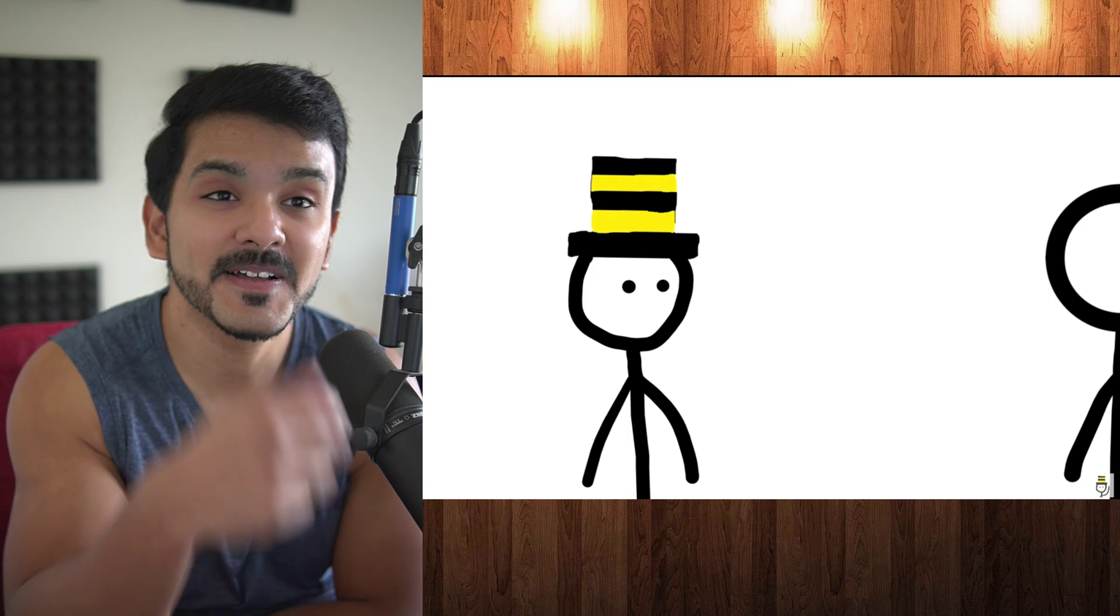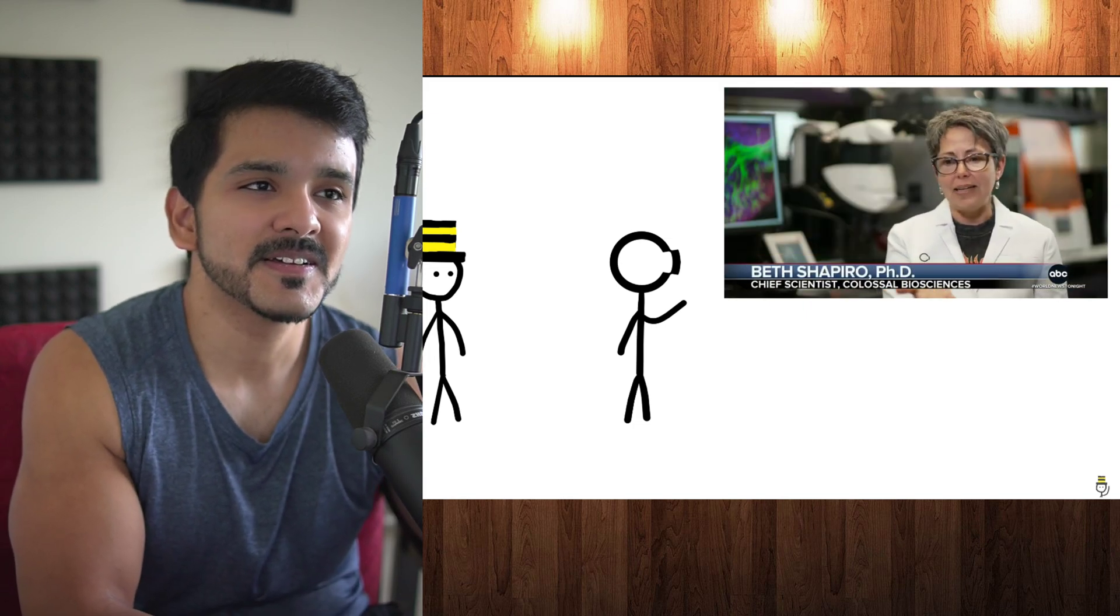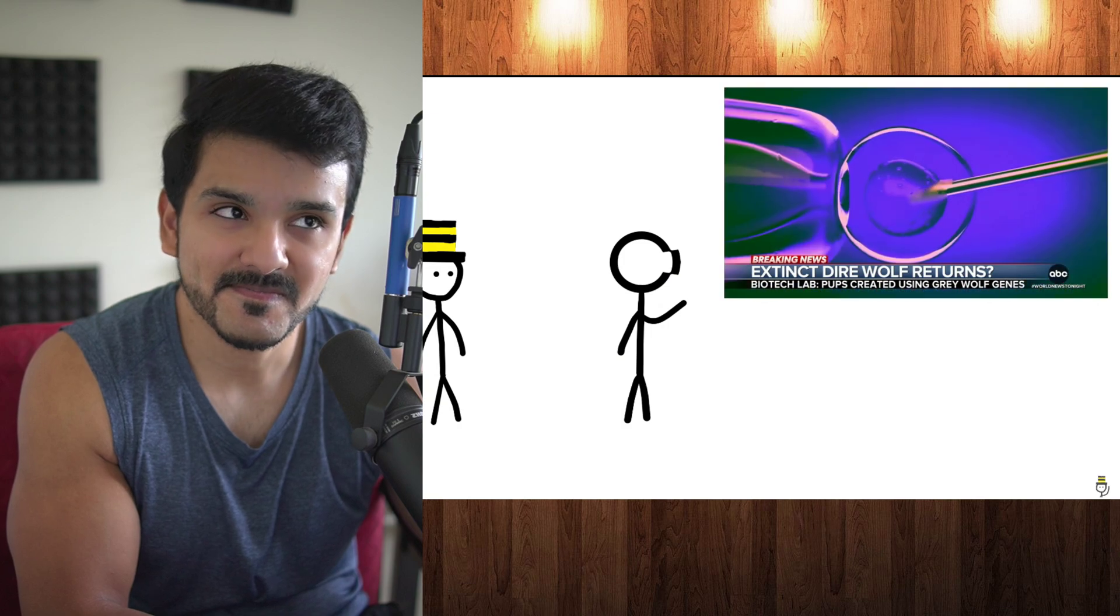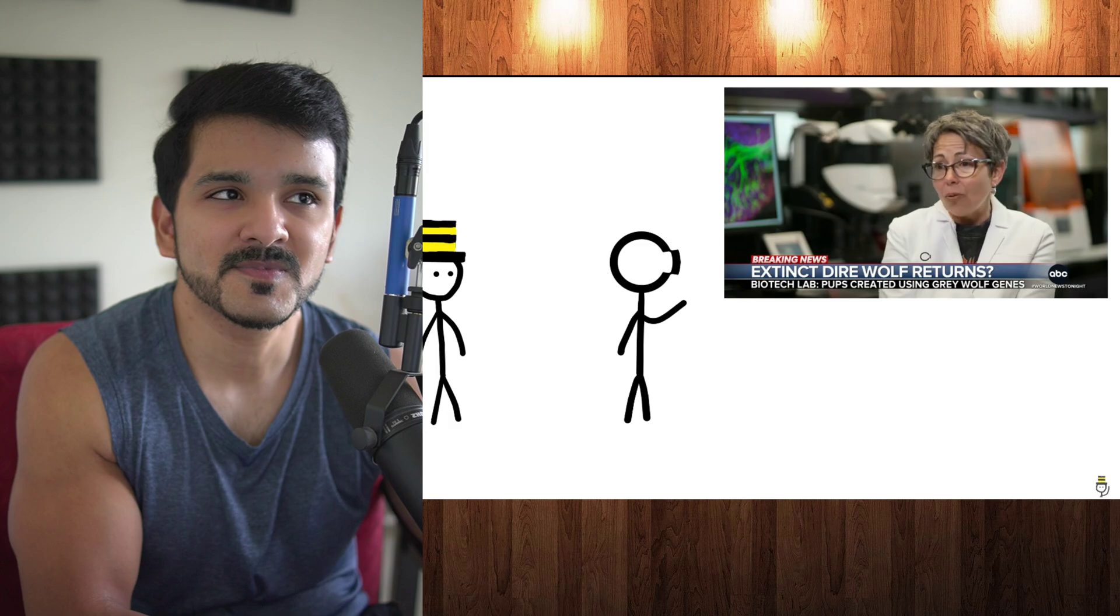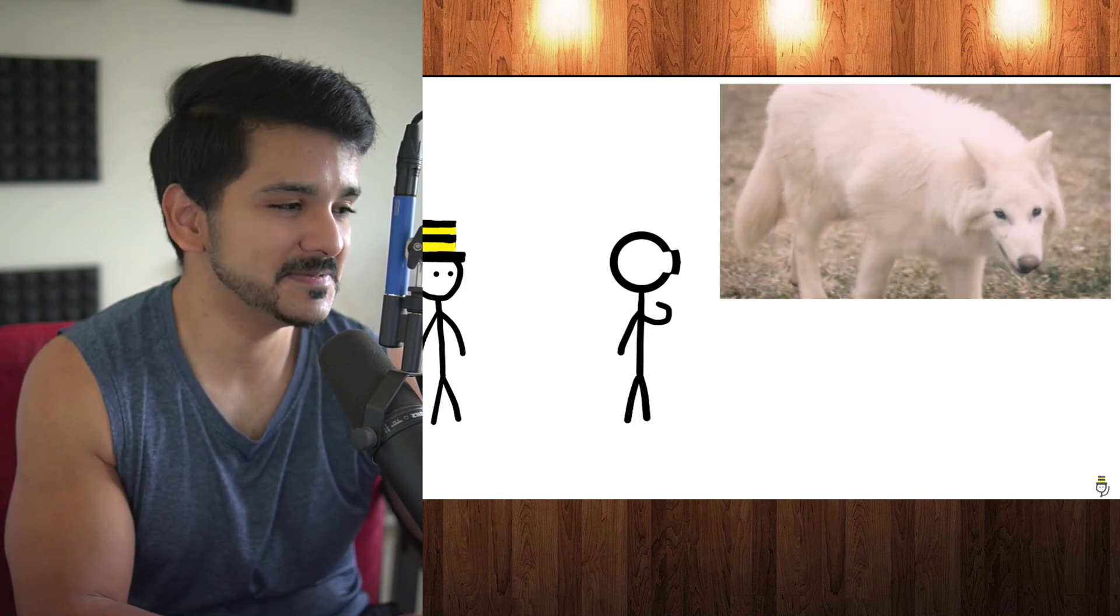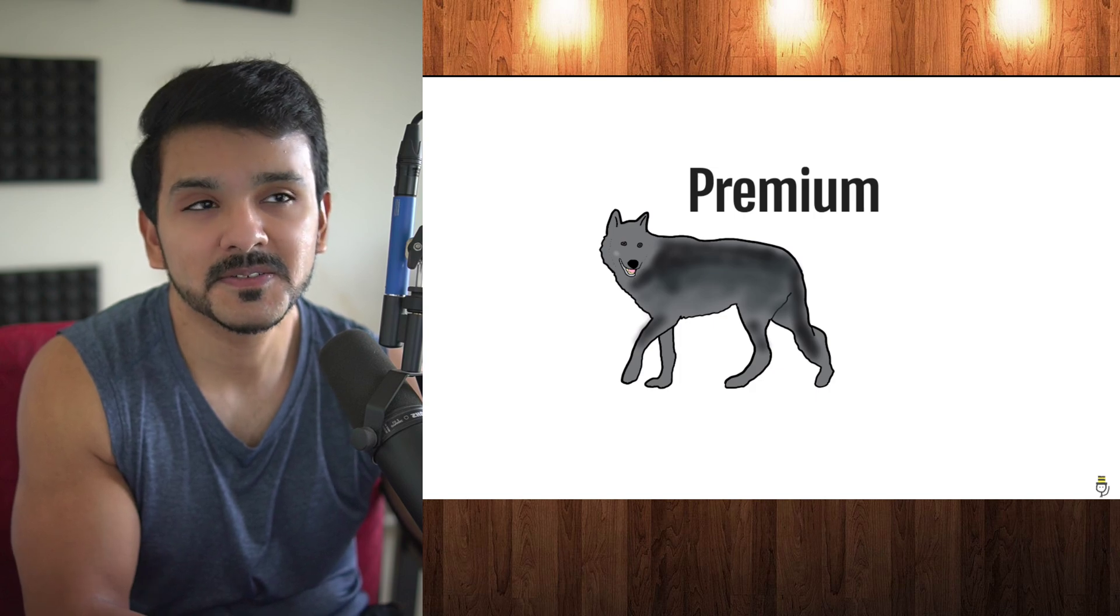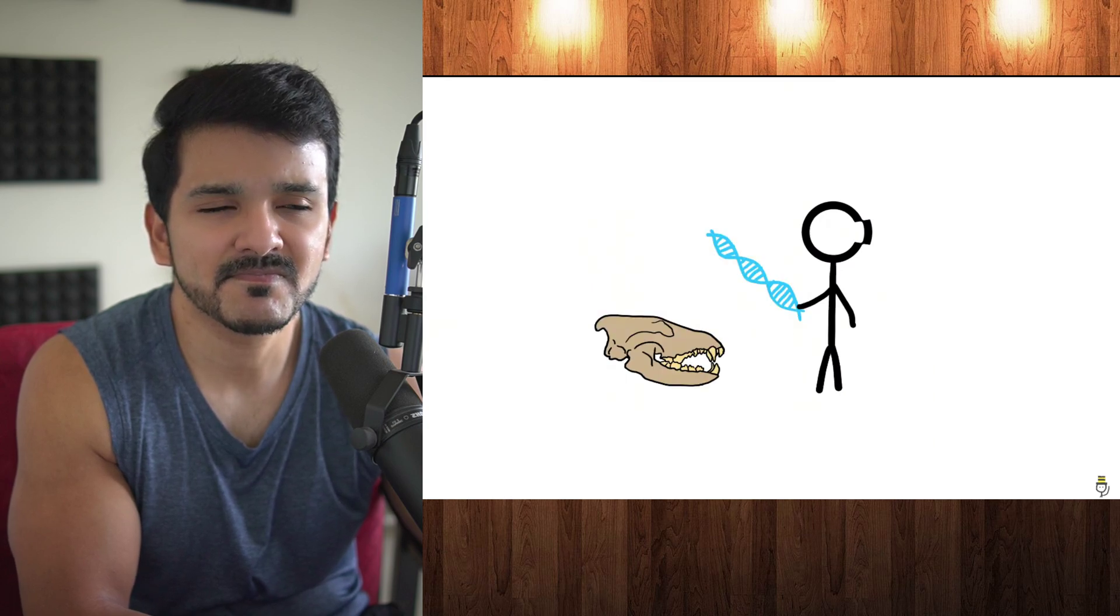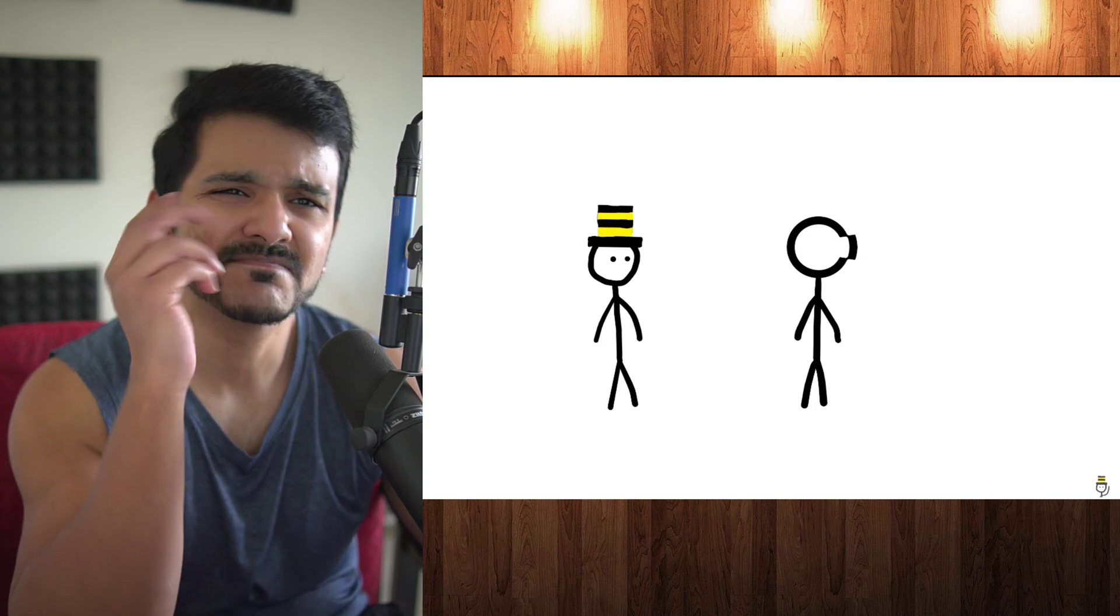Colossal Biosciences claims they brought direwolves back from extinction. They've taken a gray wolf genome, which is already 99.5% identical to direwolves, and edited those cells at multiple places in the DNA sequence to contain the direwolf version. The animal looks like a direwolf, behaves like a direwolf, and is a direwolf. But the critic says that's not a direwolf. They looked at direwolf DNA and used it as a blueprint for how to edit the gray wolf DNA.